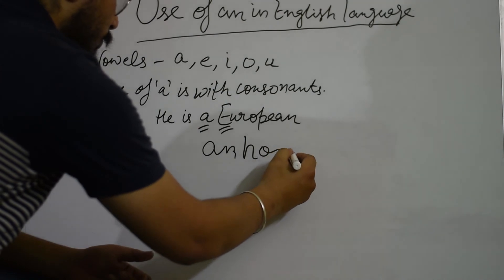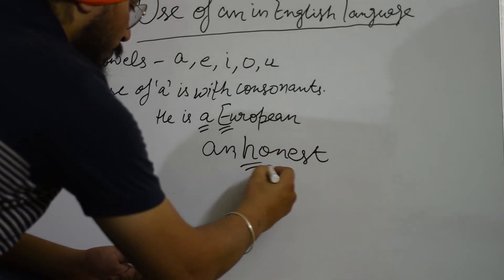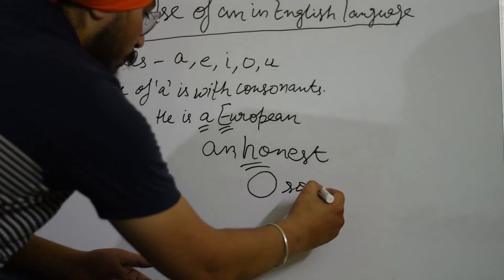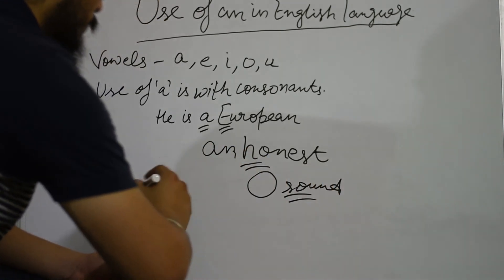Similarly, we say 'an honest person'. The initial 'h' is silent, the sound is 'o', so we say 'an honest person'.